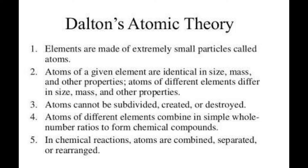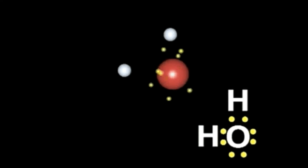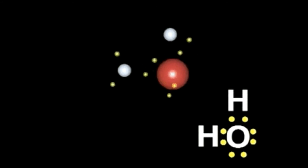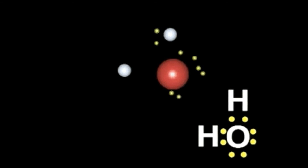The next part of the theory states that compounds are a combination of two or more different types of atoms. To make this clearer, we use the example of water, which is a compound that consists of two different atoms — a hydrogen atom and an oxygen atom — both combined to form water.